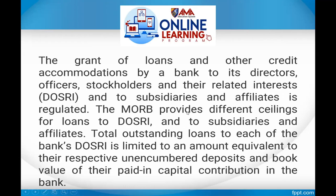The grant of loans and other credit accommodations by a bank to its directors, officers, stockholders, and their related interests, and to subsidiaries and affiliates, is regulated. Those related to directors, officers, or stockholders, or subsidiaries or affiliates of a bank, must comply with certain regulations. The MORB provides different ceilings — meaning maximum loanable amounts — for loans to directors, officers, stockholders, and their related interests, and to subsidiaries and affiliates.